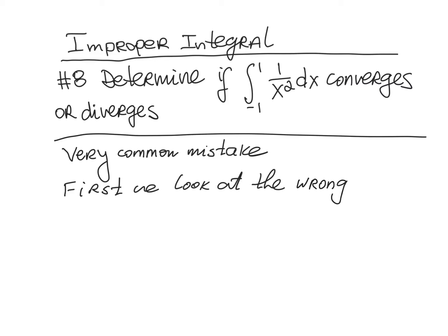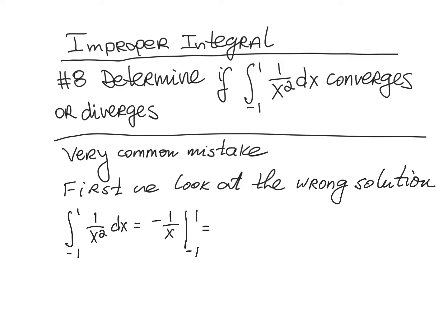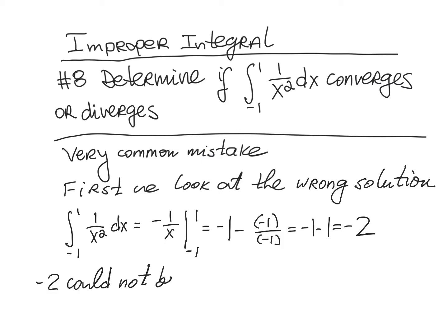Using the Fundamental Theorem of Calculus incorrectly, the integral from minus 1 to 1 of 1 over x squared dx becomes: take the antiderivative of 1 over x squared, which is negative 1 over x, evaluated from minus 1 to 1. Plugging in 1 gives negative 1, plugging in minus 1 gives minus (negative 1 over minus 1), which is minus 1, giving the answer minus 2.